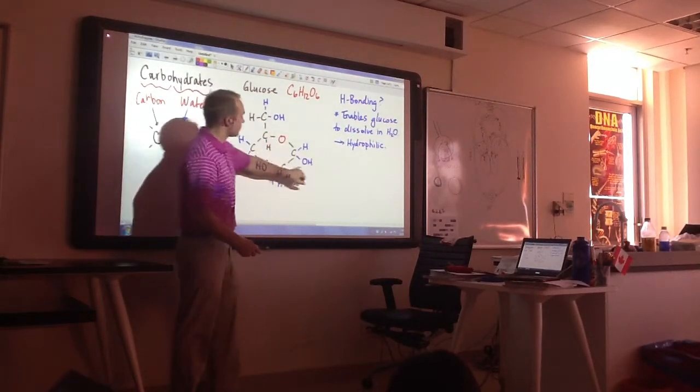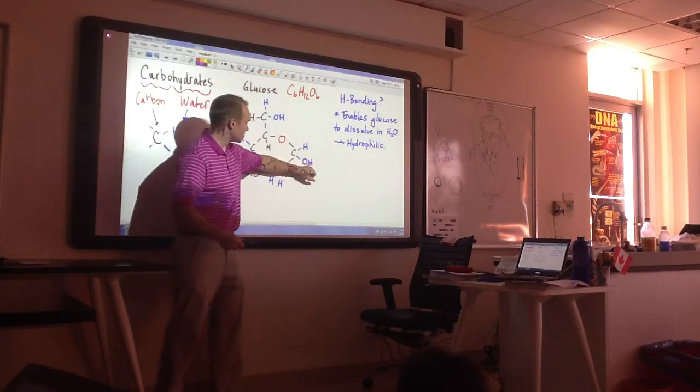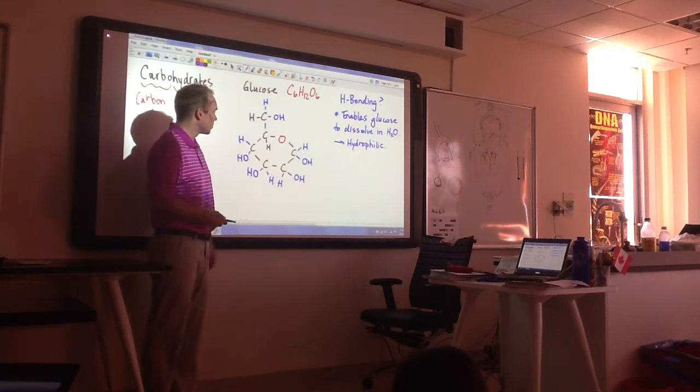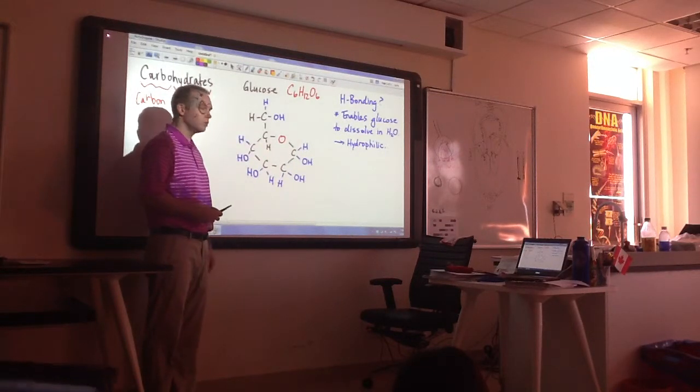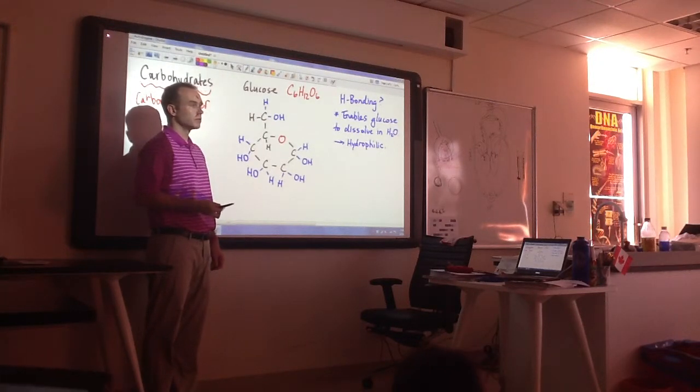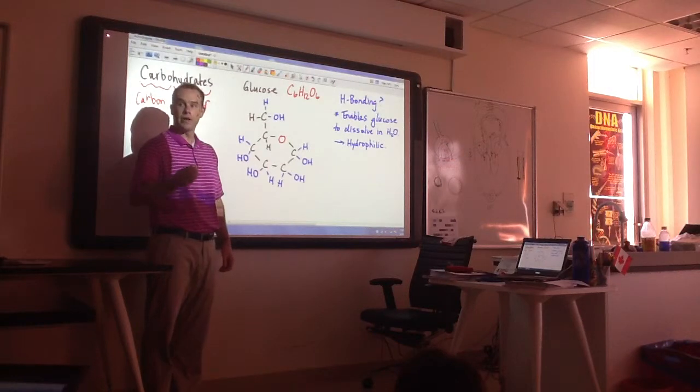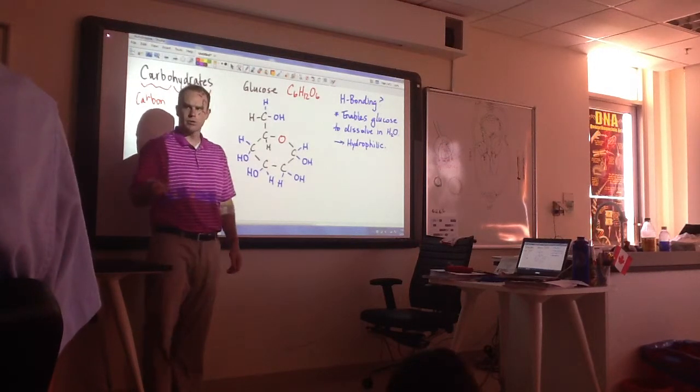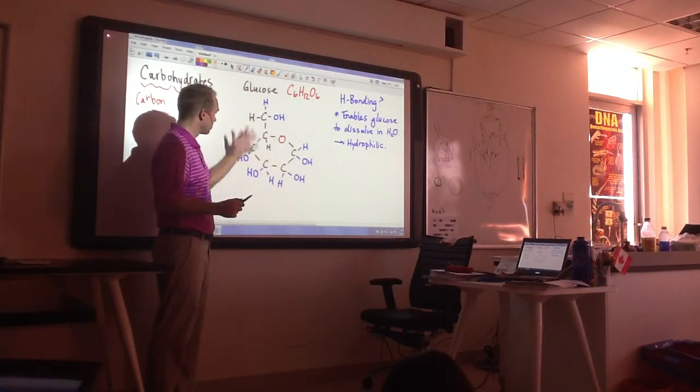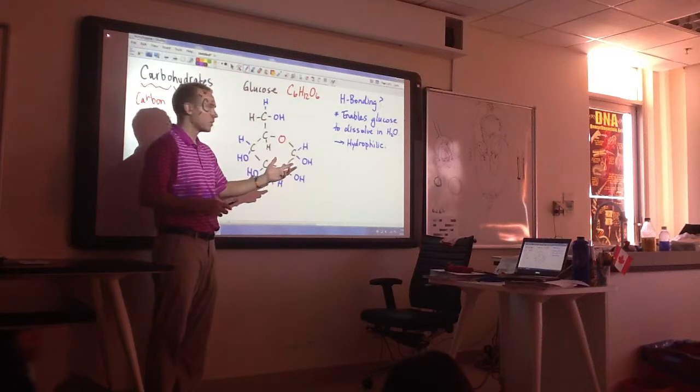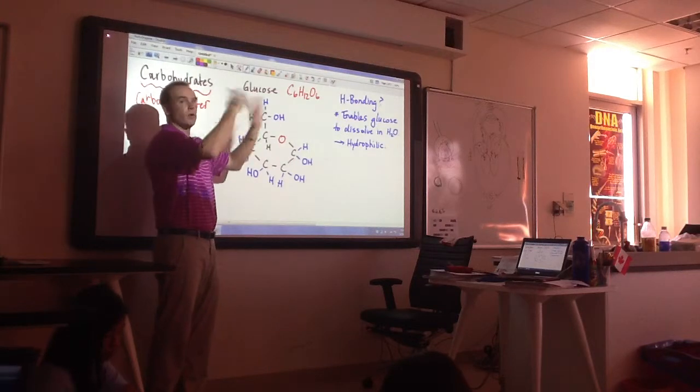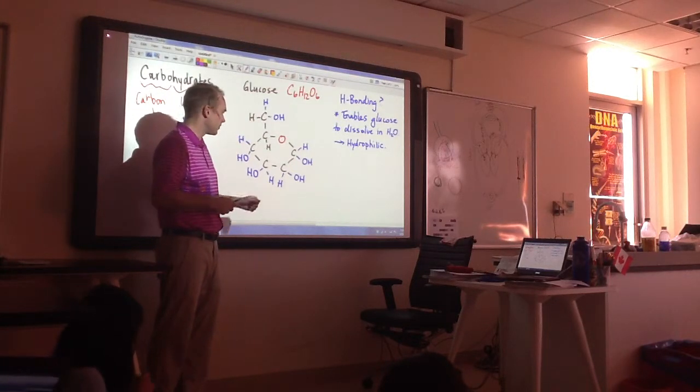So we've got glucose. We've established the fact that we have some polar bonds here which help it be hydrophilic. But then what is all this talk about making polymers of this? How do we do that? Bonding. What type of bonding? Covalent bonding. How do we know it's covalent bonding? Because it's all non-metals that we're dealing with here. Remember, we're always looking at hydrogen as being a non-metal, even though it's way over on the far side of the periodic table.